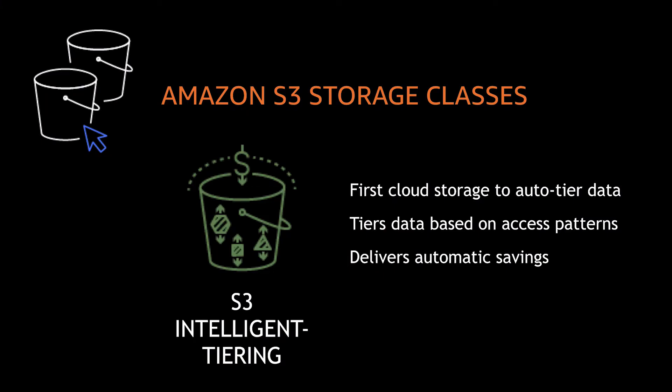What about data with unknown or changing access patterns? Our newest storage class, Amazon S3 Intelligent Tiering, is the first cloud storage class to deliver cost savings by automatically moving your objects between two access tiers based on your changing access patterns — one optimized for frequent access, and another lower-cost tier designed for infrequent access.